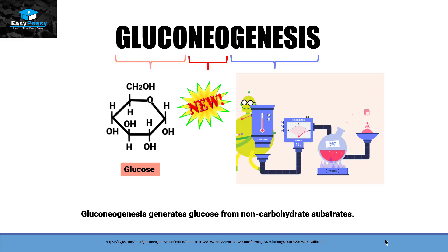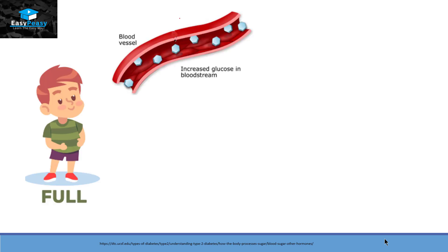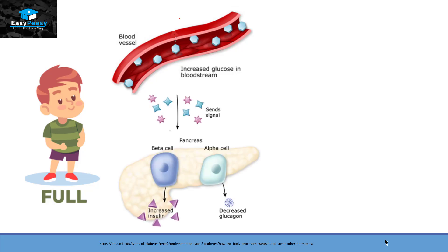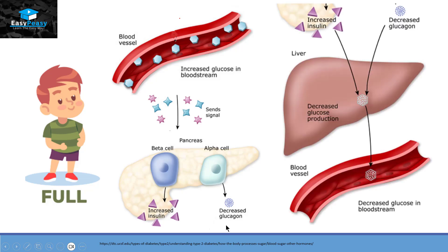When we have a full meal, our blood sugar level increases. This increased glucose level in the bloodstream signals our pancreas, where we have beta cells and alpha cells that produce different types of hormones depending on the need. Right now we have increased glucose in our bloodstream, so it signals beta cells to produce insulin and alpha cells to not produce glucagon. These hormones go to the liver, signaling that the liver should not produce more glucose because we already have enough.